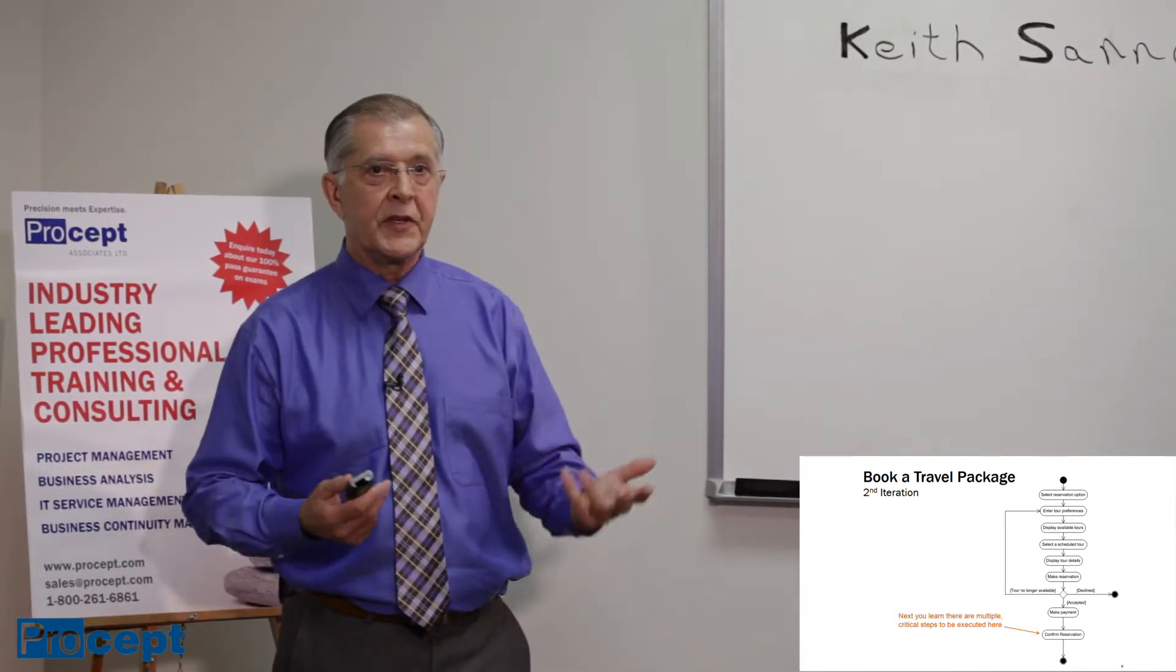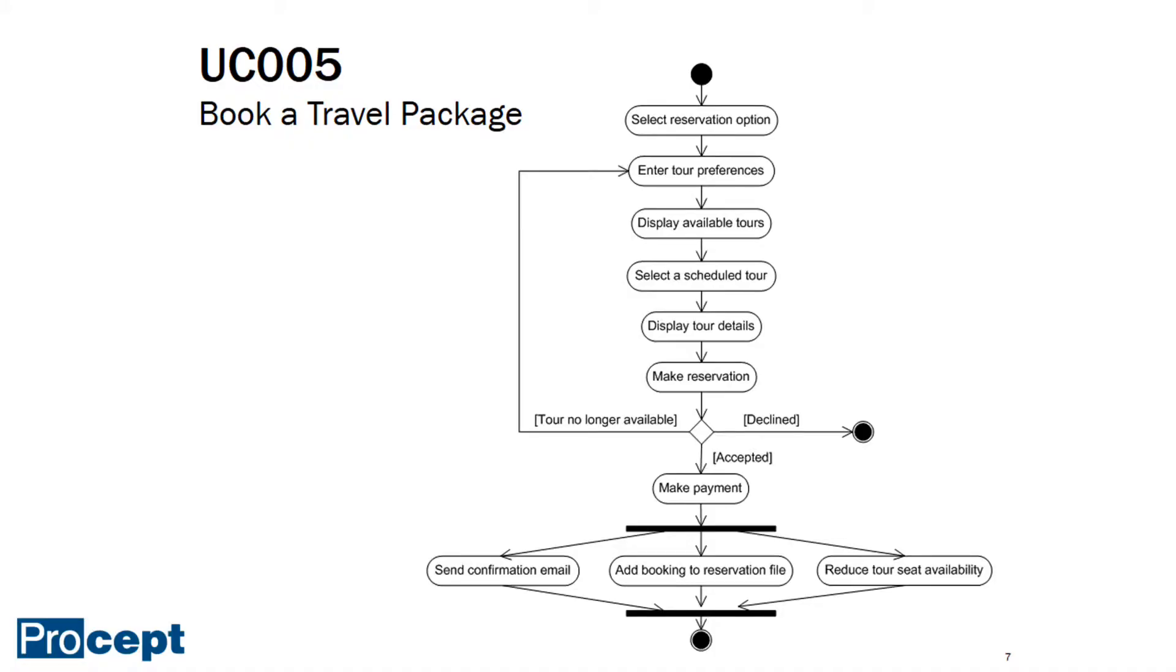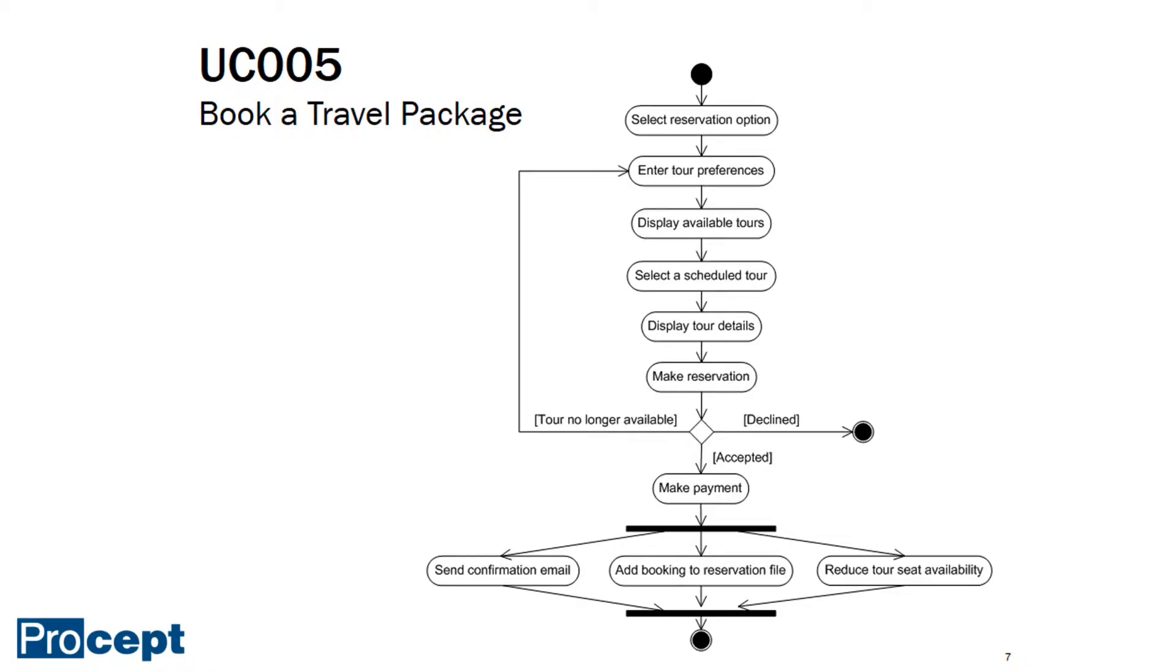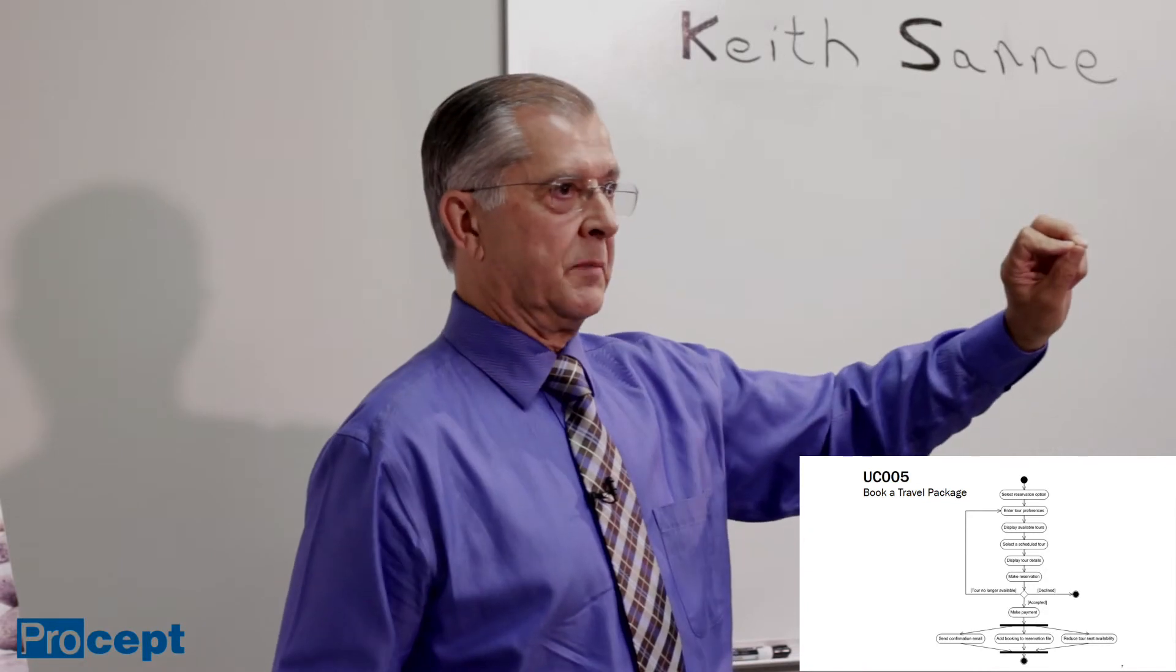Perhaps they can be done by different people or different systems, and indeed they can be done in any order because they're not dependent upon one another. This is where we have an opportunity to use the fork and join to denote just what I've described. Notice how it's now depicted: we've got that black bar at the start, known as the fork, and it's referred to as a synchronization bar used to depict a fork.